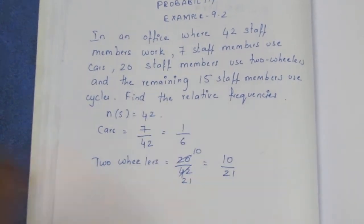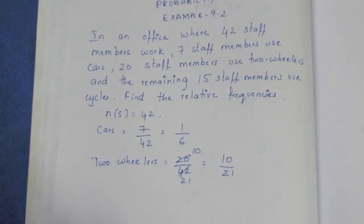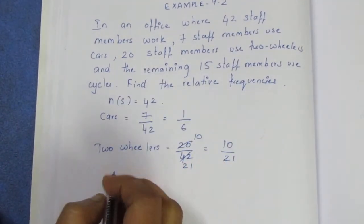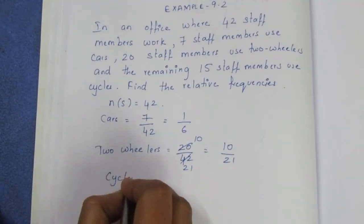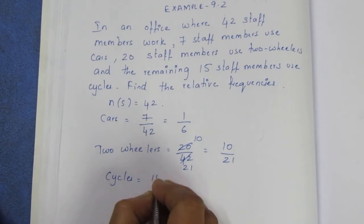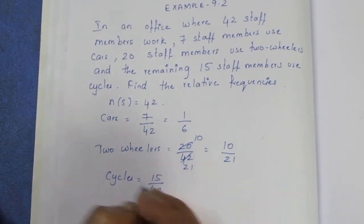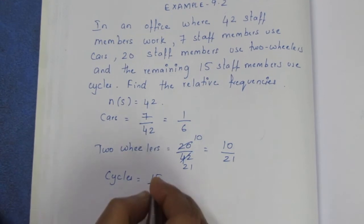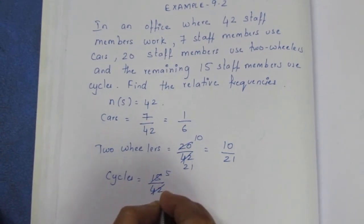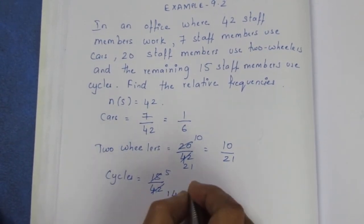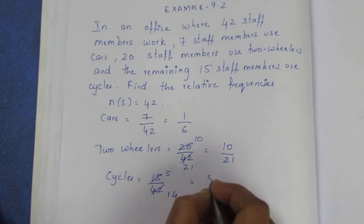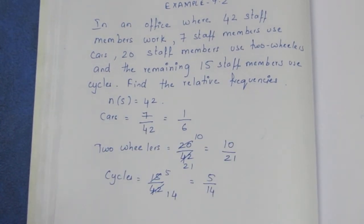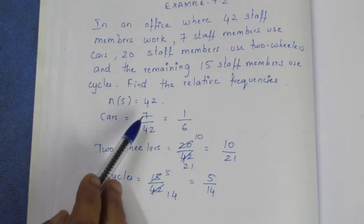Next, 15 staff members use cycles. So for cycles: 15 by the overall total 42. Cancel by 3: 3 fives are 15, 3 fourteens are 42, giving us 5 by 14 for cycles. This is the relative frequency.